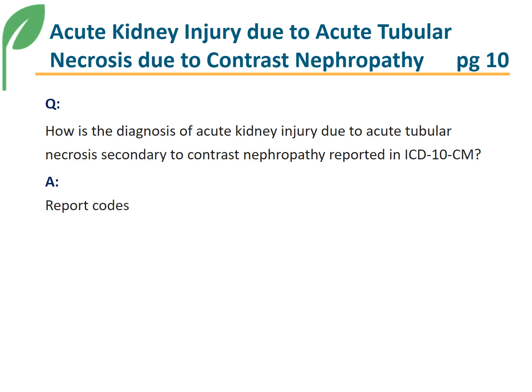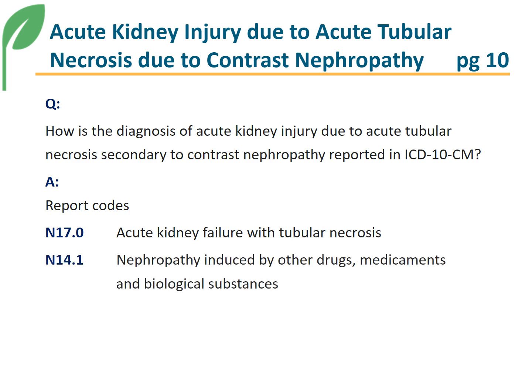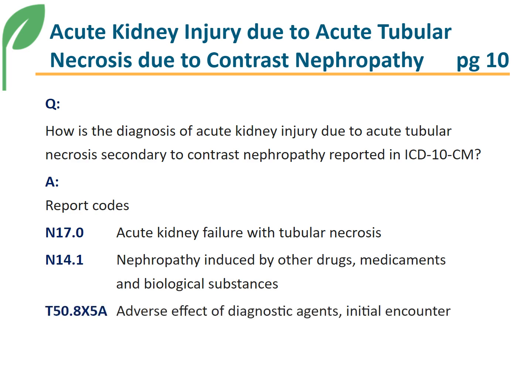Coding Clinic advises to report codes N17.0, acute kidney failure with tubular necrosis; N14.1, nephropathy induced by other drugs, medicaments, and biological substances; and T50.8x5a, adverse effect of diagnostic agents, initial encounter.